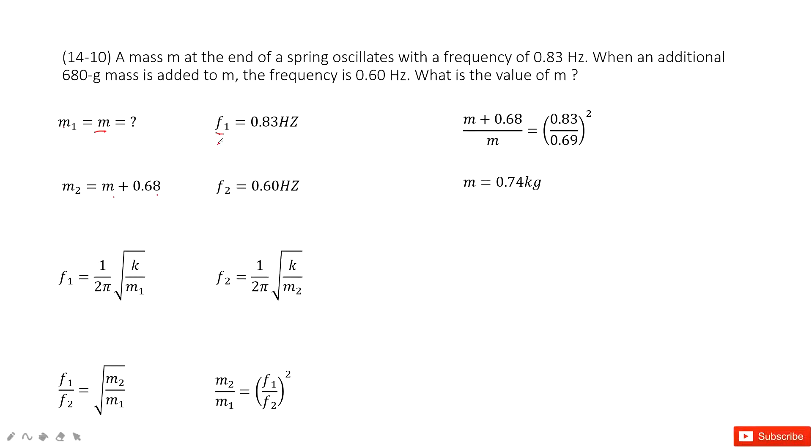In these two situations, we can see the spring never changes. That means the spring constant never changes. k is always the same. So we can write the equation for frequency with k and m in situation 1 and in situation 2.